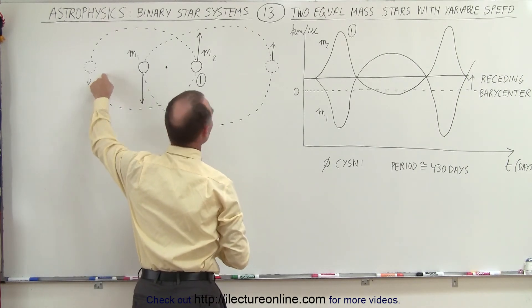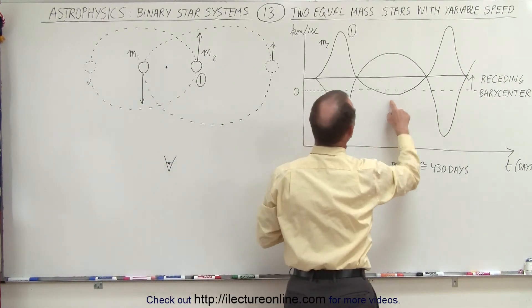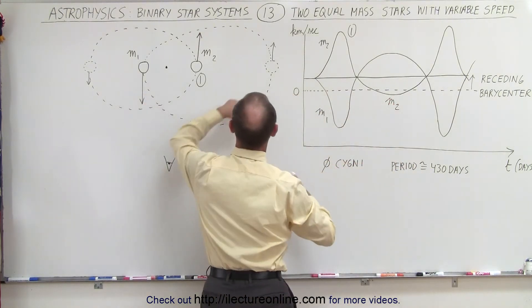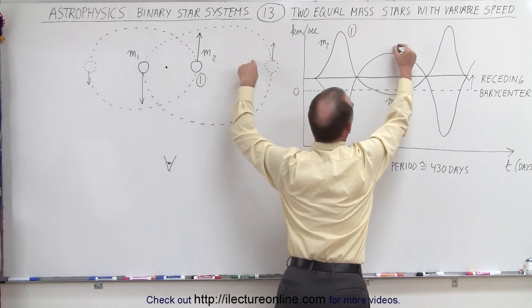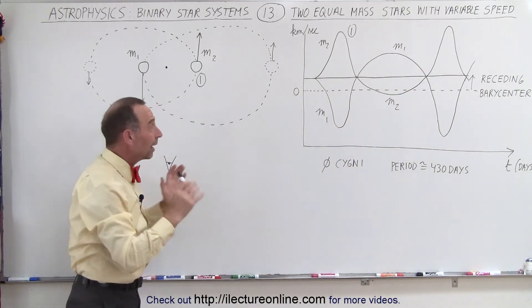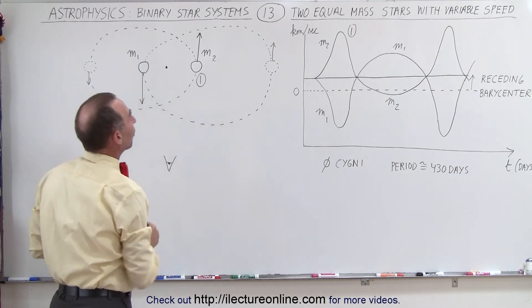So this is M2 approaching, which is what we would see over here. So again, this is the curve M2. And here we have M1 that's receding. And so we can say that's our curve M1. And that's how you can imagine what is actually going on.